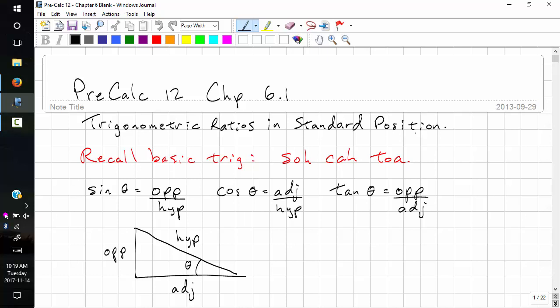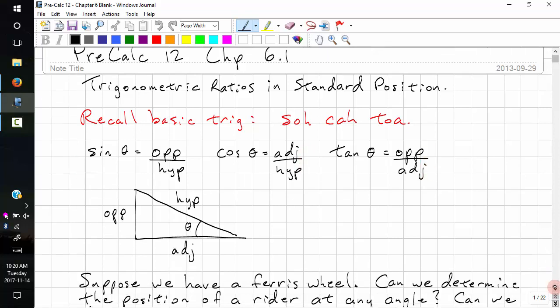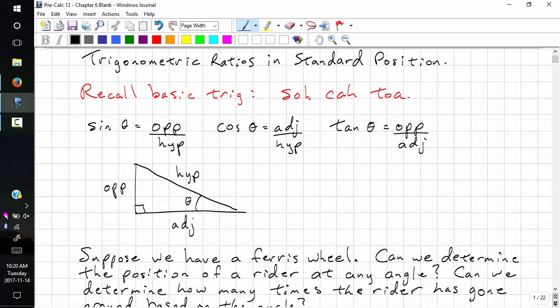So let's recall SOHCAHTOA. We have opposite over hypotenuse, adjacent over hypotenuse, opposite over adjacent, and we have a right triangle, and we have theta.